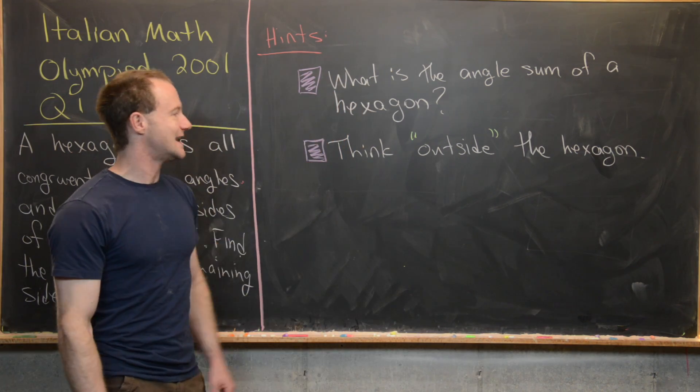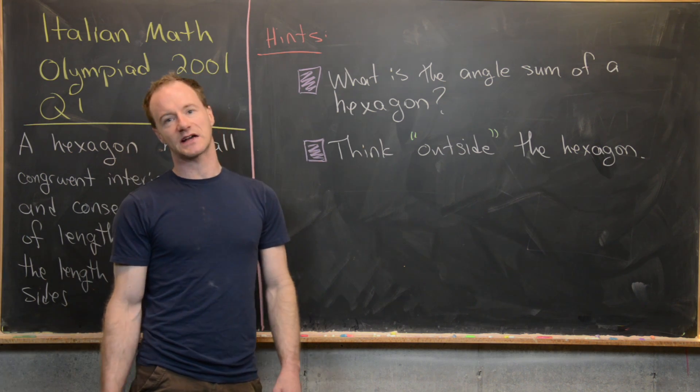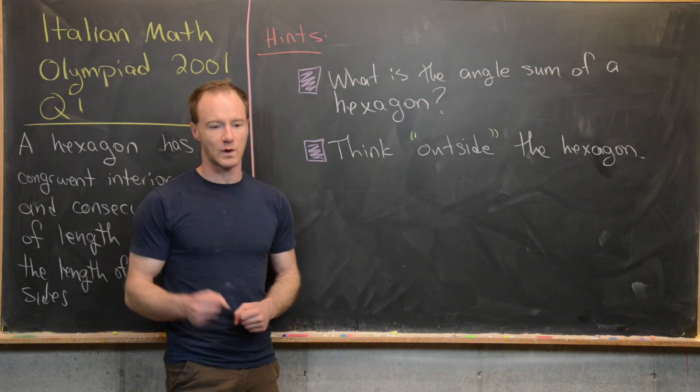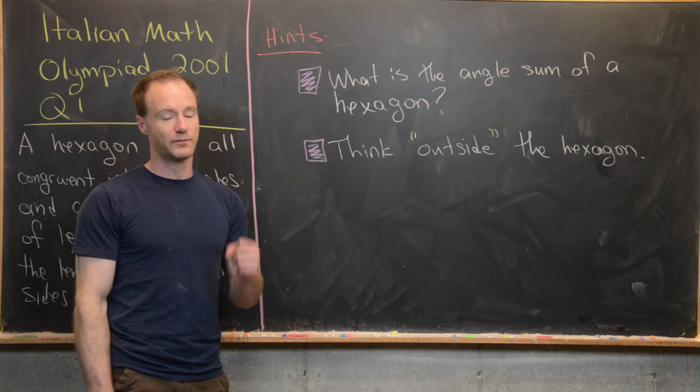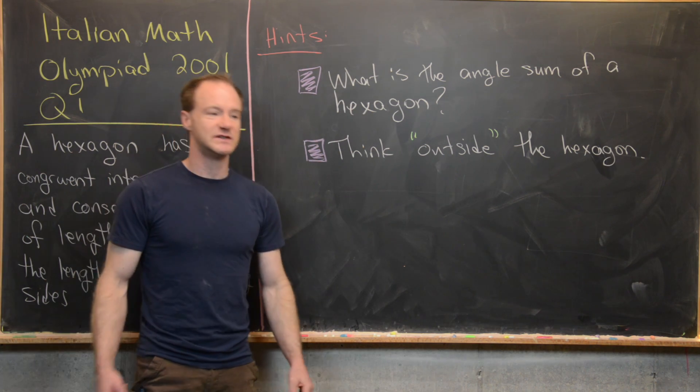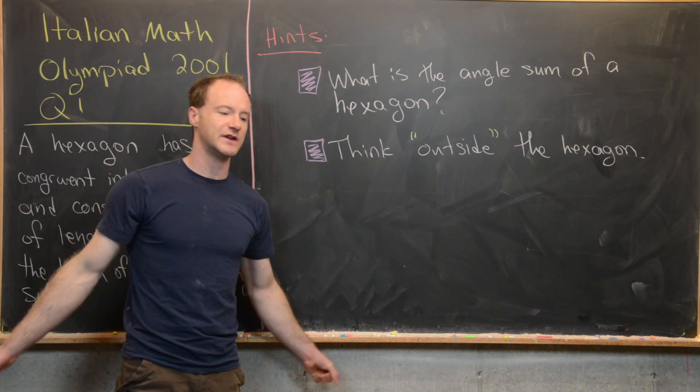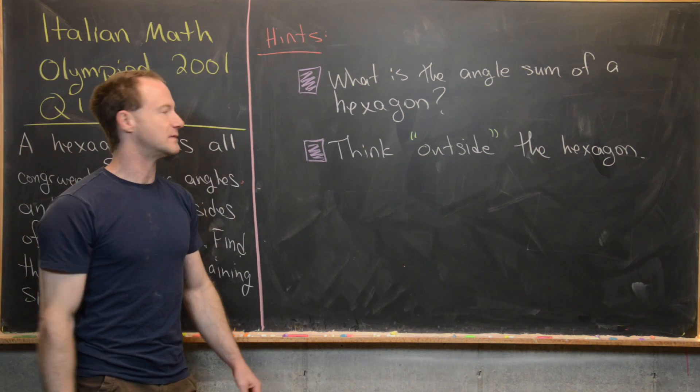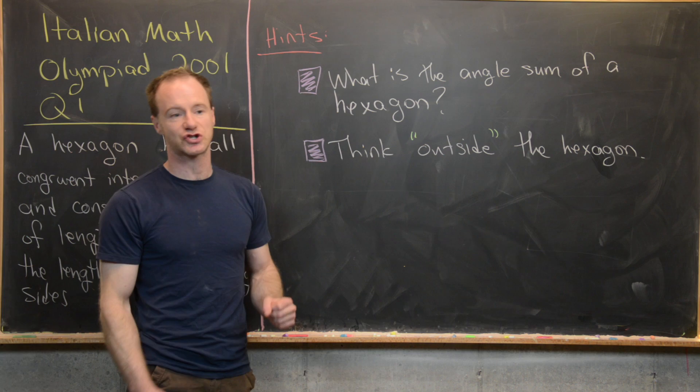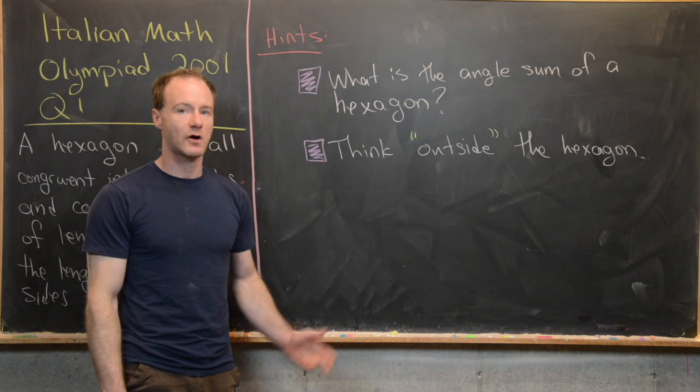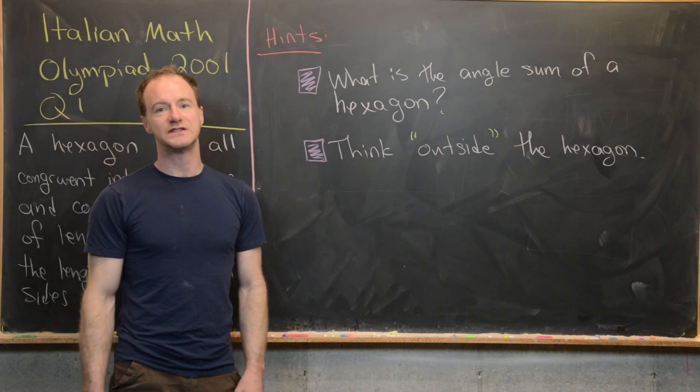And here we know all those angles have equal angle measure, so that's going to be super helpful. And then my next hint is to think outside the hexagon. Whenever you're working on these types of geometry problems, you often want to construct extra points from the ones given to you in the problems. You can do that outside of the figure or inside of the figure or both. I think it'll be most useful in this case to construct some points outside of this hexagon. Give the problem a go with these two hints and then we're going to come back with a solution.